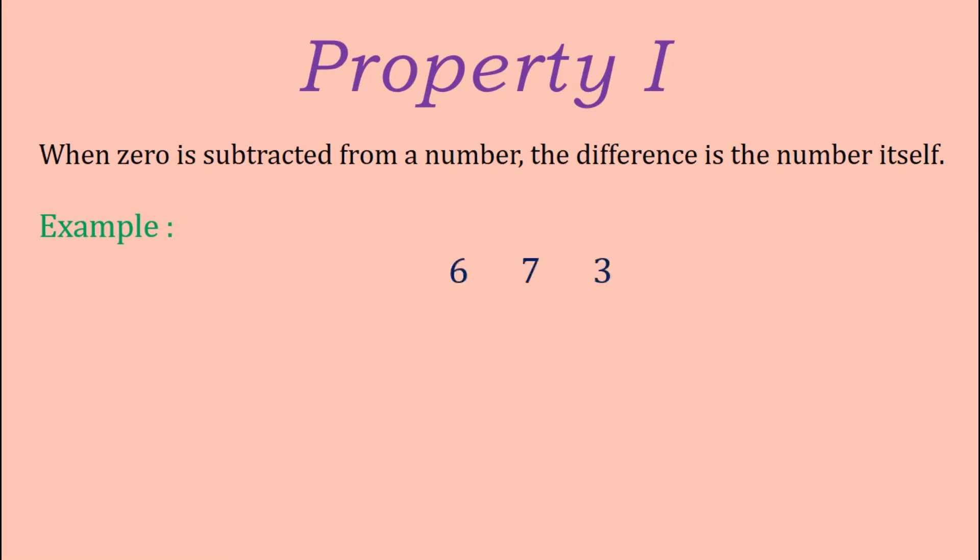We have two numbers, 673 and 0, where 0 is the subtrahend. When we subtract 0 from 673, we get the difference as 673. That is, the number itself. This property is also known as the zero property of subtraction.